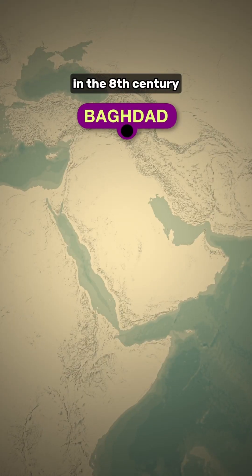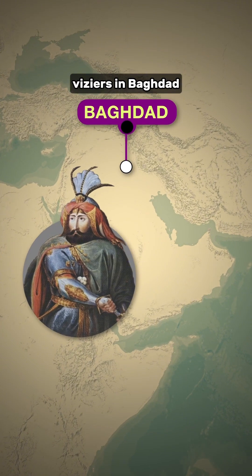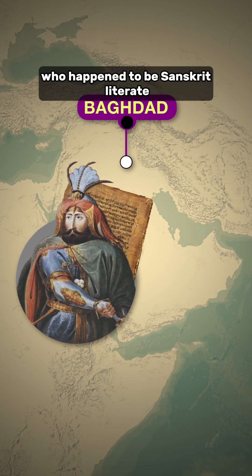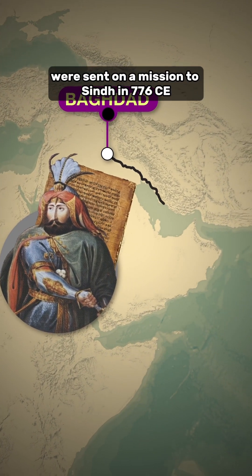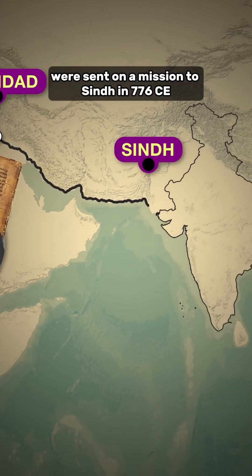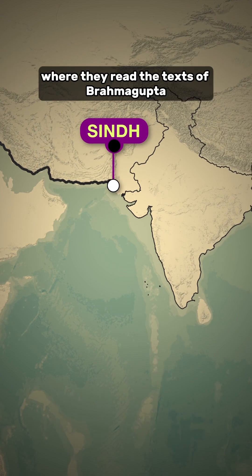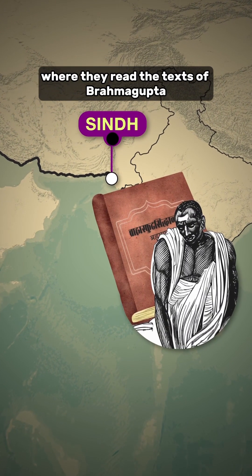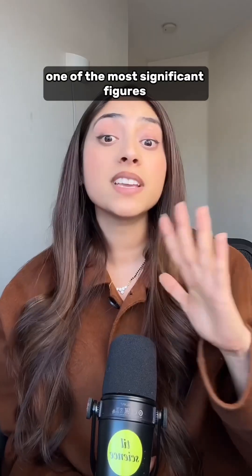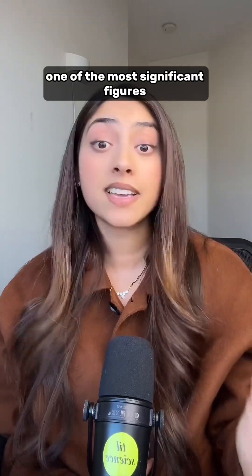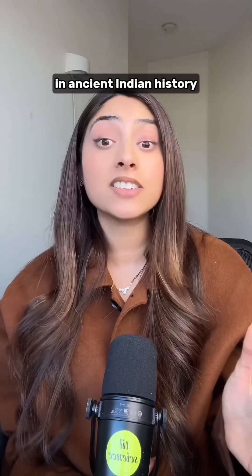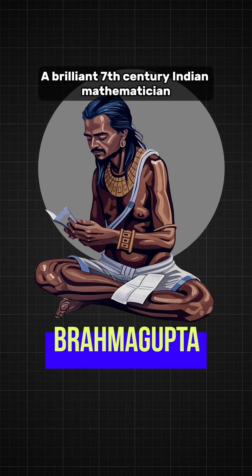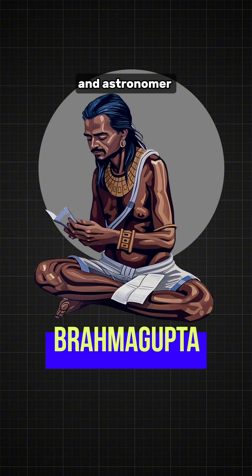In the 8th century, viziers from Baghdad who happened to be Sanskrit literate were sent on a mission to Sindh in 1776, where they read the texts of Brahma Gupta, one of the most significant figures in ancient Indian history — a brilliant 7th century Indian mathematician and astronomer.